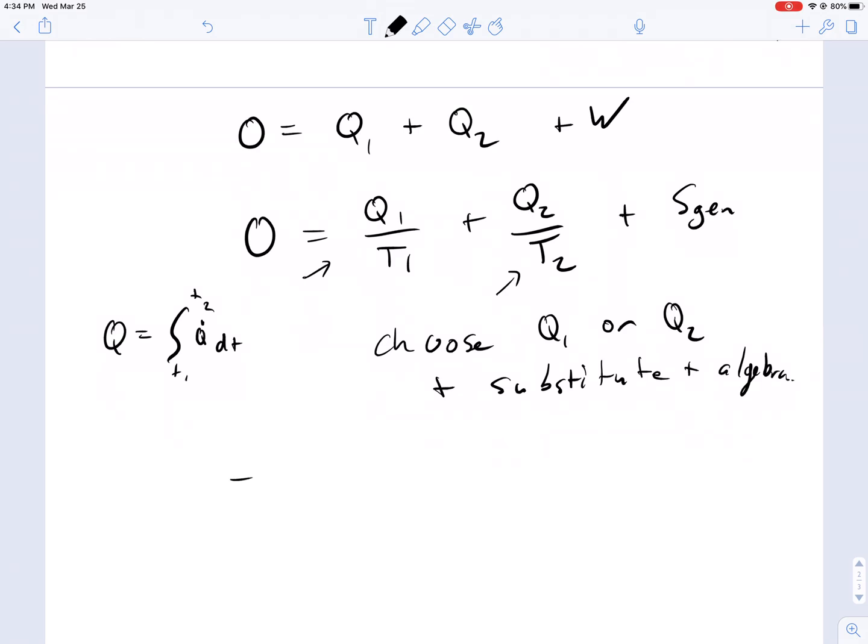What we end up with is minus W equals Q1 times T1 minus T2, this is if we're substituting and swapping out the Q2 term and then combining them together, all divided by T1. Because Q1 times T1 over T1 is still Q1, and then Q1 times the T2 over T1 is where you get this from the entropy equation, plus S gen.